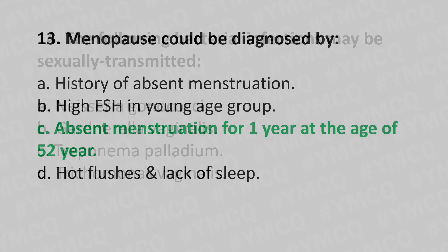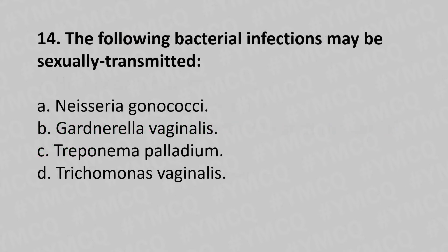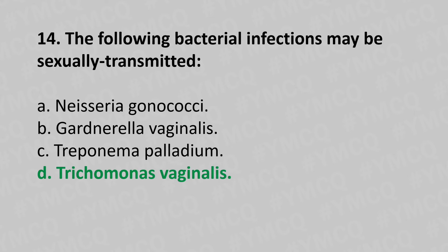Question 14: The following bacterial infection may be sexually transmitted — option A: Neisseria gonococci, option B: Gardnerella vaginalis, option C: Treponema pallidum, option D: Trichomonas vaginalis. The answer is option D: Trichomonas vaginalis.